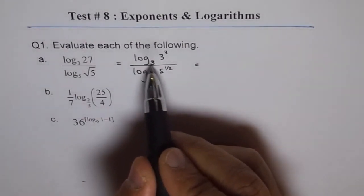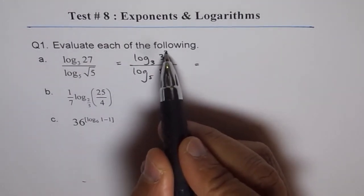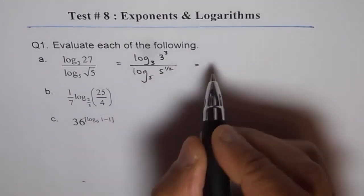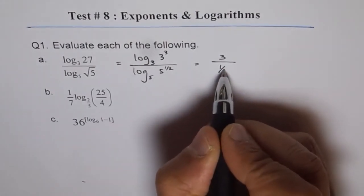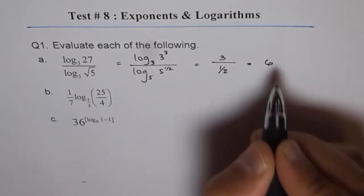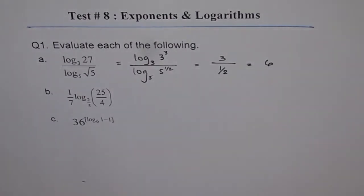So that gives you log 3 of 3 is 1 and that is power rule. It comes 3. So 3 to the power of 3. Numerator is 3 and denominator is half. And so we get 6 as our answer. So that is the solution for the first one.